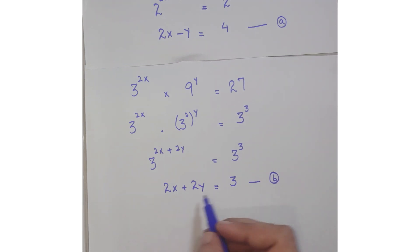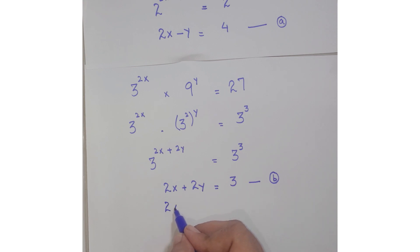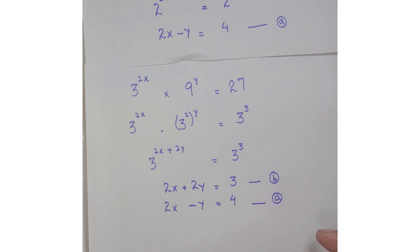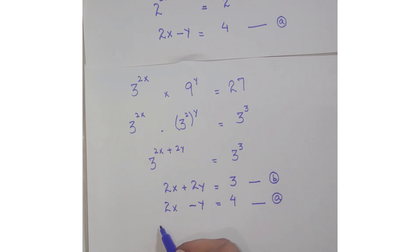Now we have two equations: equation B is 2x plus 2y equals 3, and equation A is 2x minus y equals 4. You can solve these using the elimination method or the substitution method. Here I will use the elimination method — subtracting the two equations will cancel the 2x terms.